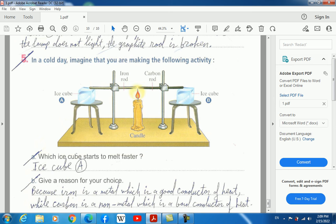In a cold day, imagine that you are making the following activity. We have two tables with ice cube A and ice cube B. Then we are connecting them. There is a candle in the middle, and there are two rods: one iron rod and one carbon rod. Which ice cube starts to melt faster? Of course, the ice cube A. Give reason for your choice. Because iron is a metal which is a good conductor of heat, while carbon is a non-metal which is a bad conductor of heat. The ice cube B will melt on its own, not due to the effects of heat. But the ice cube A will melt very fast due to the transfer of heat from the candle through the iron rod to the ice cube itself.